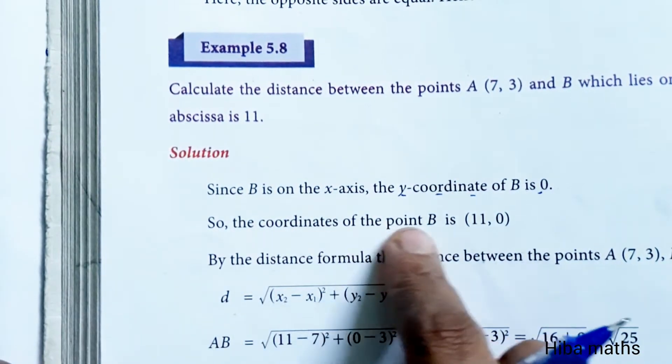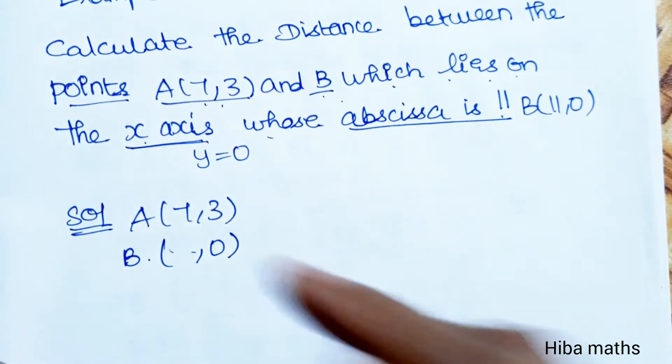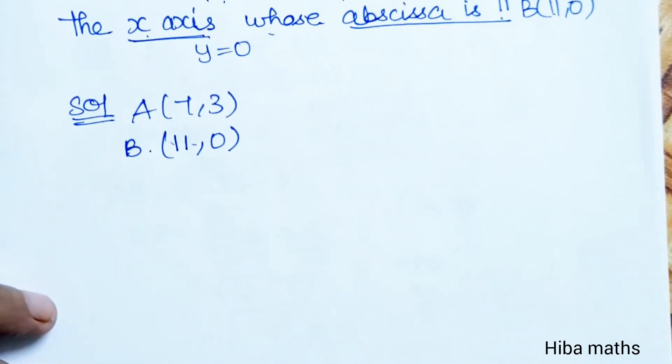So the coordinates of point B is (11,0). The abscissa is 11, so B point is (11,0).